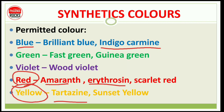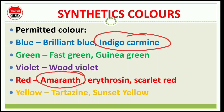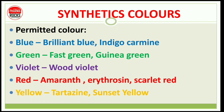जिन colors के नाम में color का name नहीं है वो most IMP हैं — for example: indigo carmine (blue), amaranth (red), erythrosine (red), and tartrazine (yellow). ये चार most important synthetic colors हैं for exams. जहाँ green नाम आता है जैसे fast green, guinea green — वो green होगा; scarlet red, sunset yellow — इनमें color evident है.